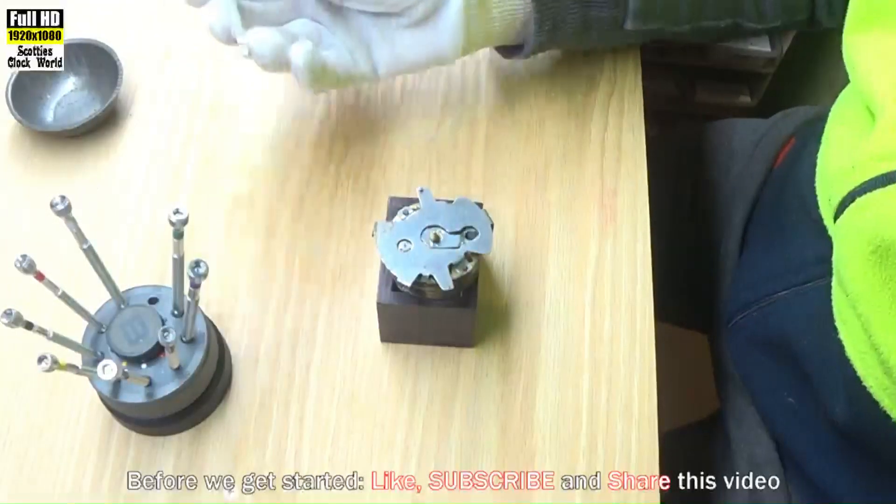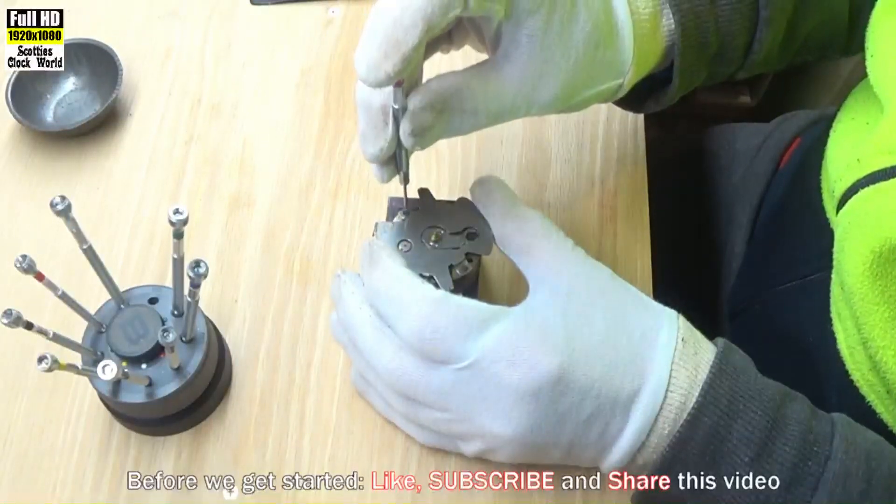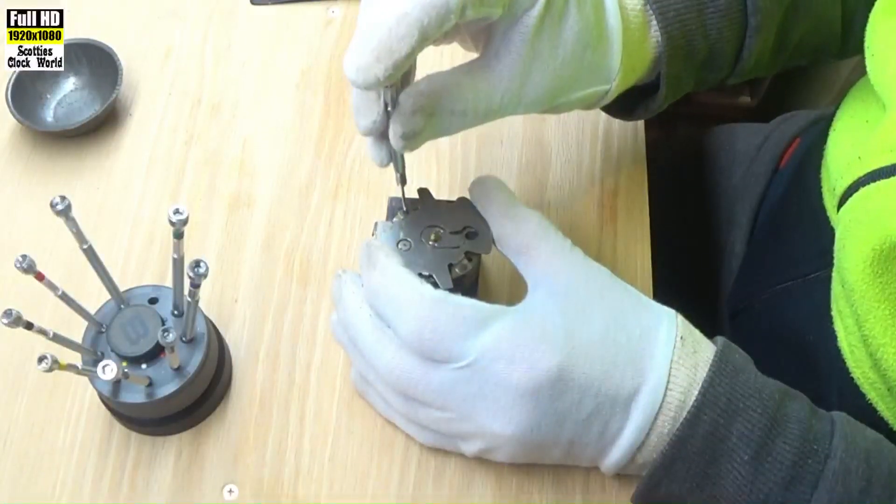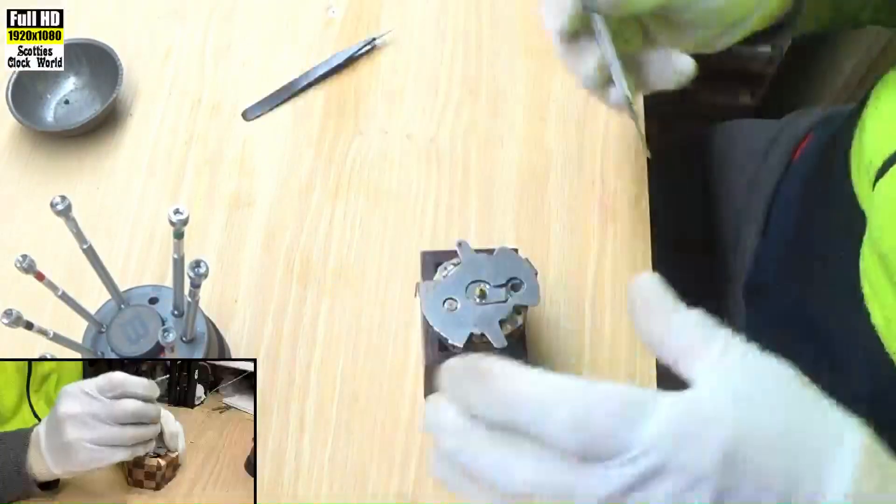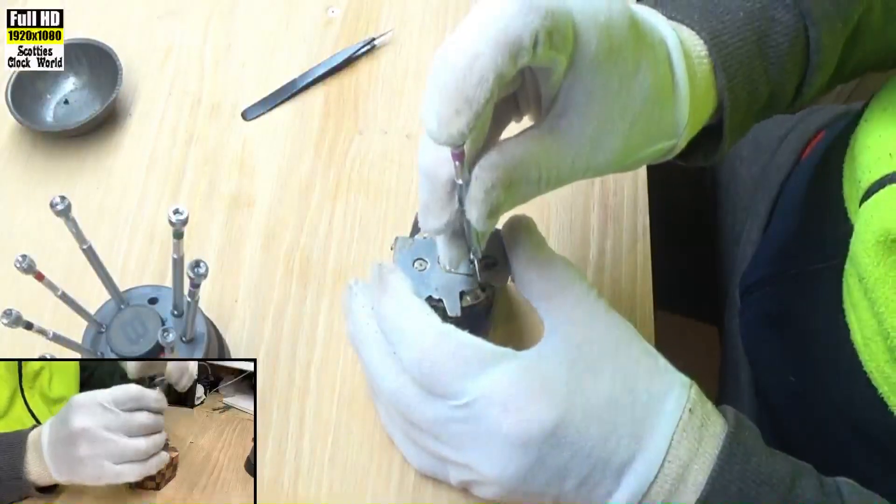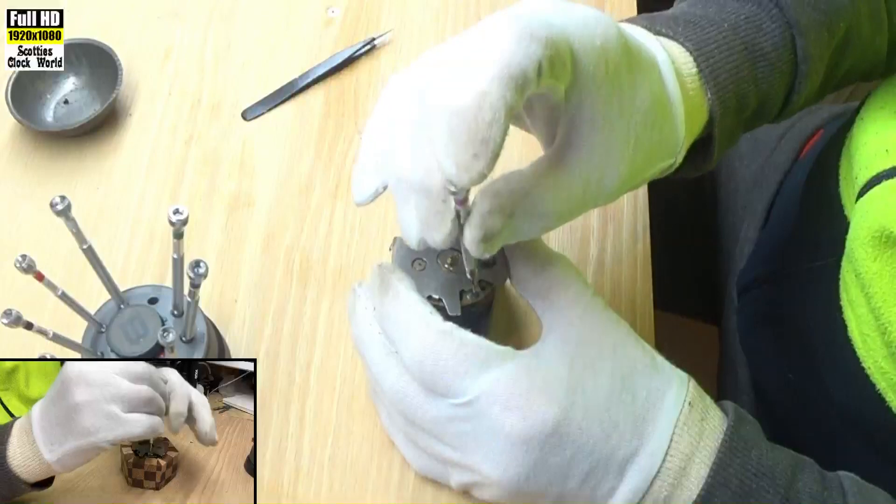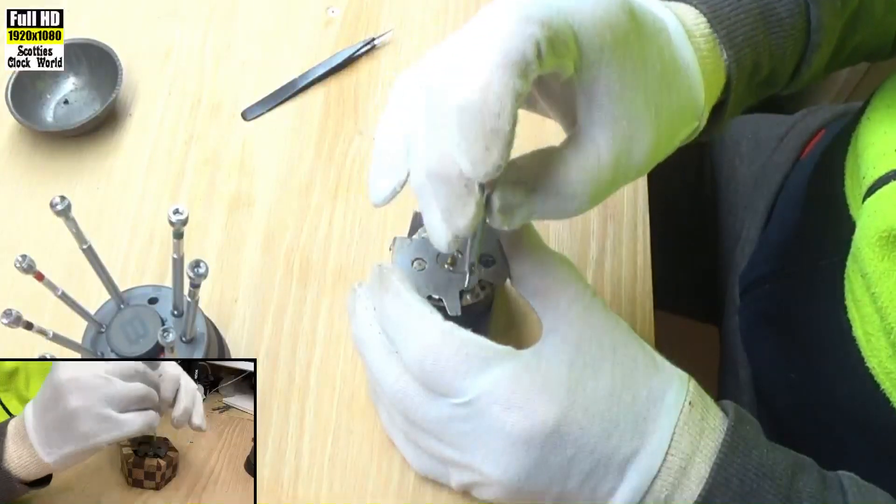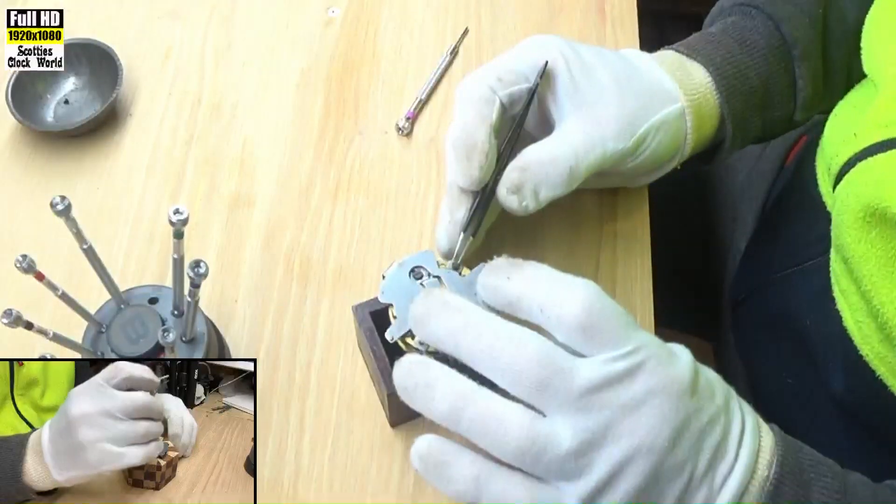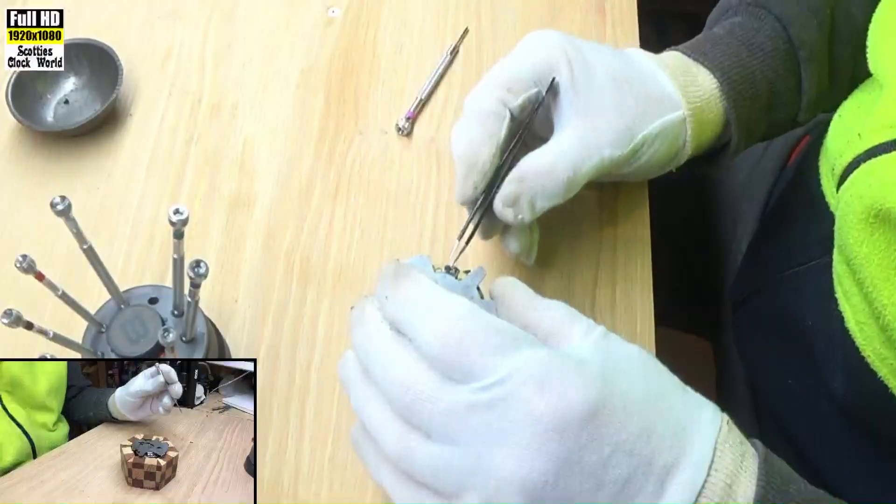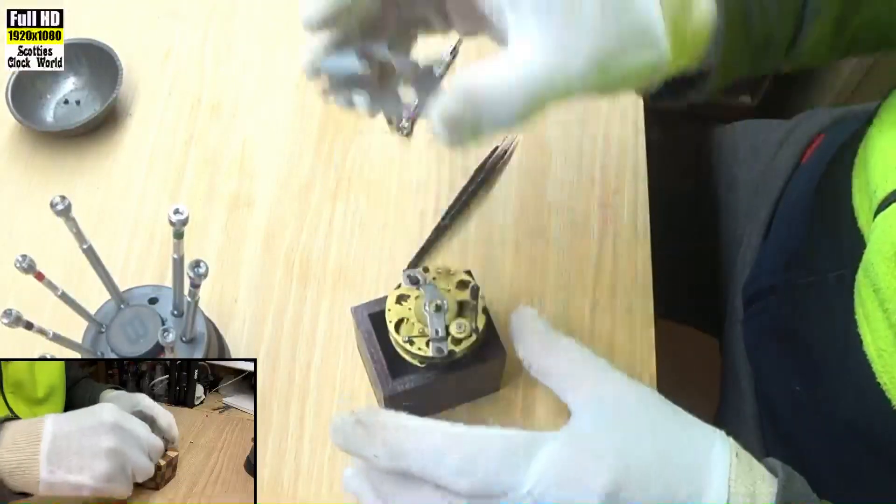Now we'll start to take the movement to pieces. Remove this top plate first. Take the second one out, pick it up with a pair of tweezers in the dish, take the plate off.